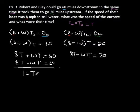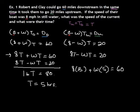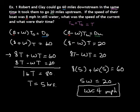Using elimination on 8T plus WT equals 60 and 8T minus WT equals 20, we get 16T equals 80, so time equals 5 hours. To find the speed of the current, substitute T equals 5 back in: 8 times 5 plus W times 5 equals 60, giving us 40 plus 5W equals 60, so 5W equals 20, and W equals 4. The current is 4 miles per hour — make sure to include your units.